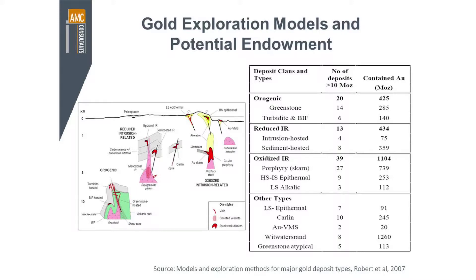No one can see one part per million, but one part per million is economically viable in terms of the gold content of a mine. The table shows how many deposits have been identified with more than 10 million ounces of gold — orogenic deposits have at least 20 such finds worldwide, reduced intrusion-related models have 13, oxidized models 39, and other types over 20. In each of those models there are some very large gold deposits, and for every one of those there are many more smaller gold deposits. This is really important when it comes to investing in the gold industry.